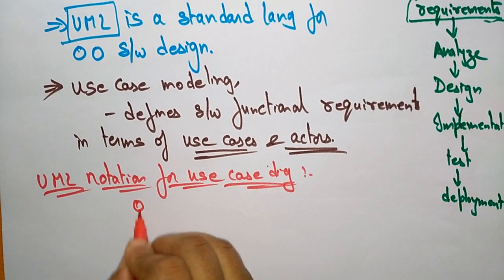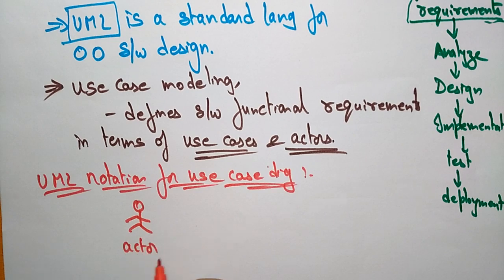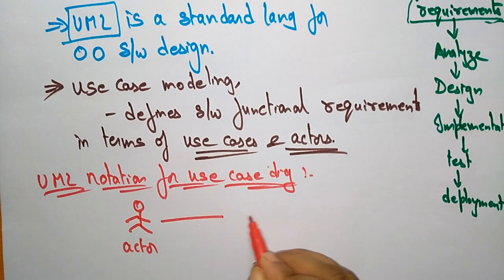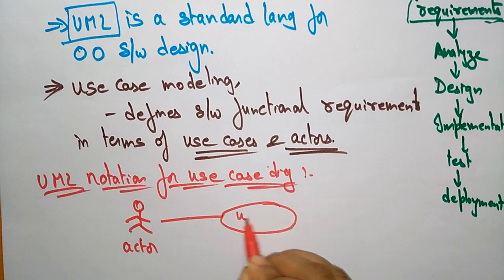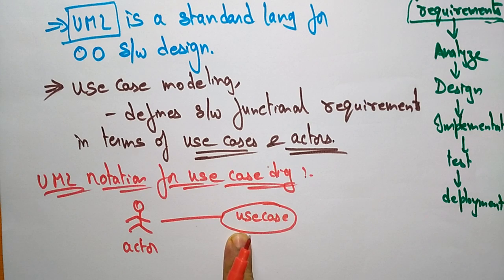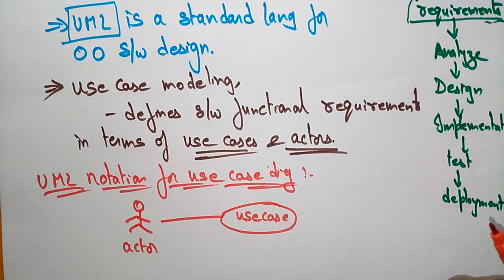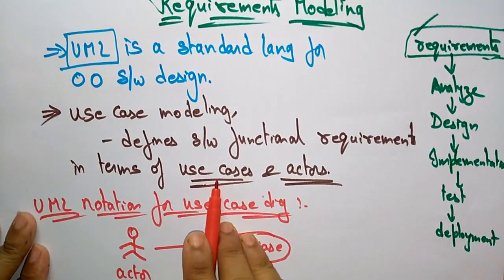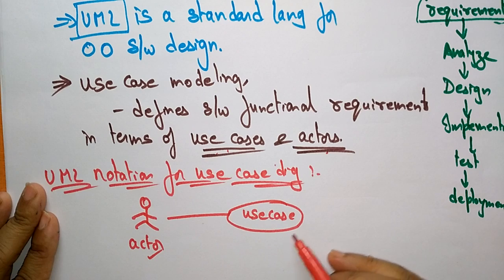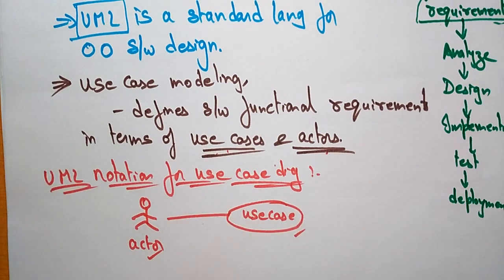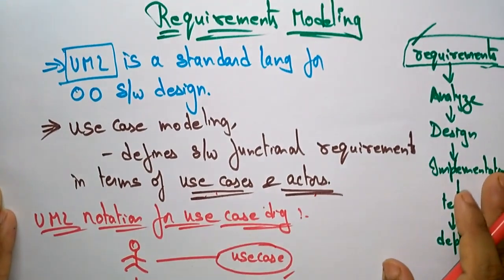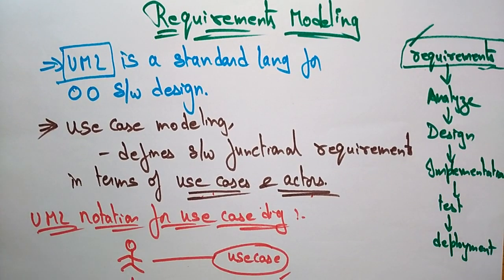An actor is a person or anything that interacts with the use case. This is the symbol for the use case, and this is an actor. One use case can interact with another use case — one use case can extend another, or one use case can include another. These are the representation annotations used in requirement modeling: use cases and actors. Both communicate with the help of some relationship. This is about requirements modeling.